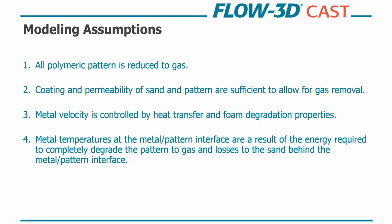It's assumed that the coating and the permeability of the sand are sufficient enough to allow for gas removal. And then metal velocity is going to be controlled by heat transfer and foam degradation properties. So the Lost Foam model contained in Flow3D cast makes use of foam density in two different ways. First it uses the product of the density times the specific heat of the foam as a heat capacity variable. And this controls the amount of heat energy needed to raise the temperature of the foam, and then subsequently melt or vaporize the foam in the mold. And then secondarily, the density of the foam is used in the foam residue defect model to characterize the mass of the defect material produced when the foam is degraded. It's also important to note that not only does it lose heat to the foam, but it's also losing heat to the sand that's surrounding the mold. This is important when really long metal paths are used for gating.